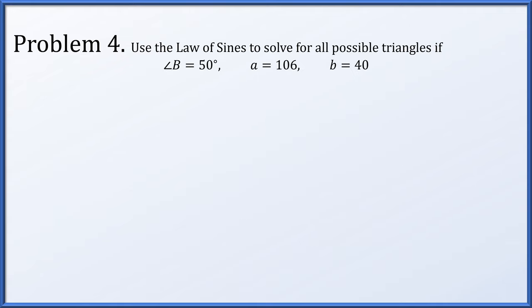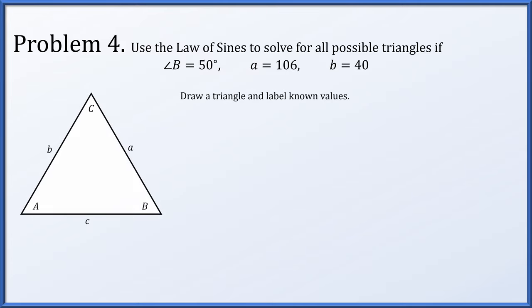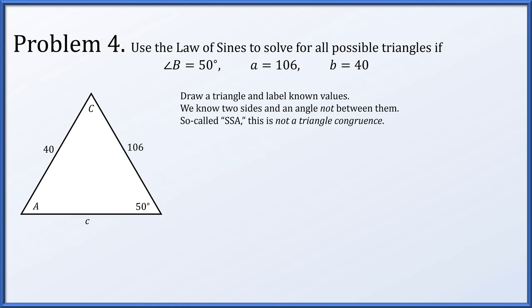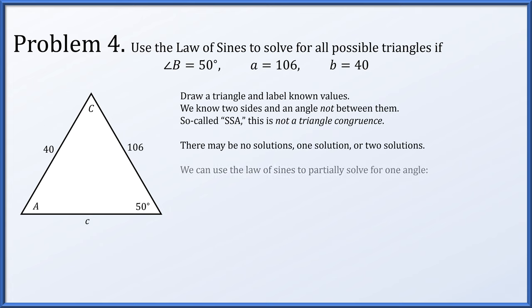Problem four: we'll use the law of sines to solve for all possible triangles if angle B is 50 degrees, side length a is 106, and side length b is 40. Let's draw a triangle and label the known values. We know two sides and an angle that isn't between them — again, we have side-side-angle. It's not a triangle congruence; there might be no solutions, one solution, or possibly two. We can use the law of sines to partially solve for angle A.